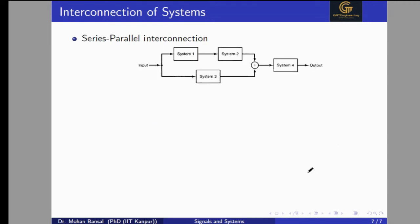Now, the series-parallel interconnection is a combination of both series and parallel interconnections. System 1 and System 2 are connected in series. The combination of System 1 and System 2 is then connected with System 3 in parallel mode. System 4 is connected in series after that. So System 1 and System 2 are convolved, System 3 is added in parallel, and System 4 is convolved with the overall response.